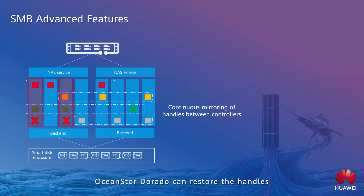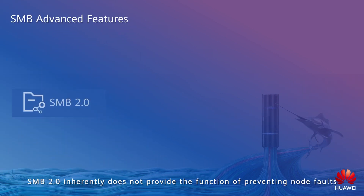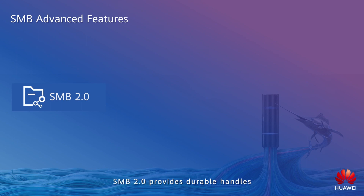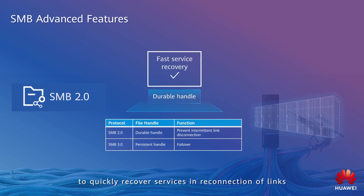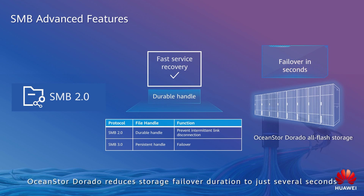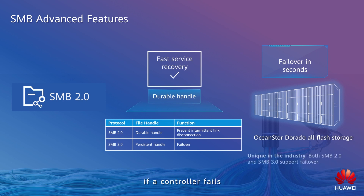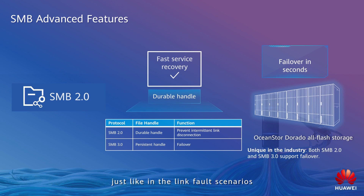OceanStore Dorado can restore the handles on another controller to ensure service continuity. SMB 2.0 inherently does not provide the function of preventing node faults. Instead, SMB 2.0 provides durable handles to quickly recover services upon reconnection of links. OceanStore Dorado backs up SMB 2.0 durable handles on multiple controllers. In addition, OceanStore Dorado reduces storage failover duration to just several seconds. As a result, if a controller fails, SMB 2.0 clients can also use durable handles to quickly recover services, just like in link fault scenarios.